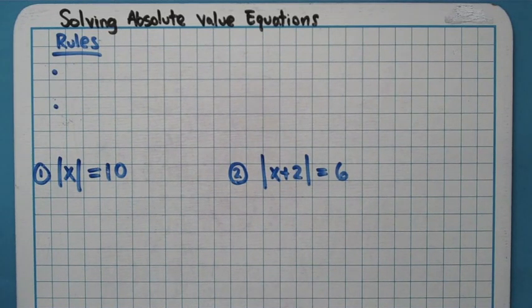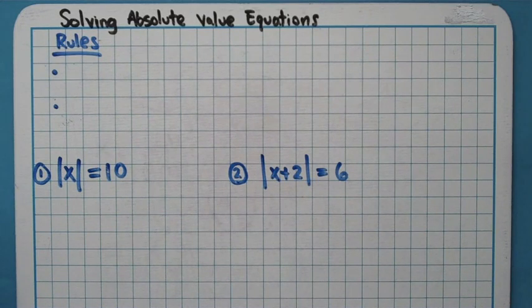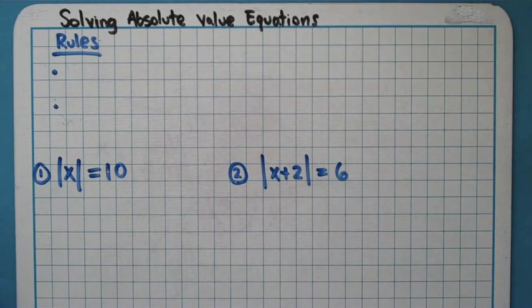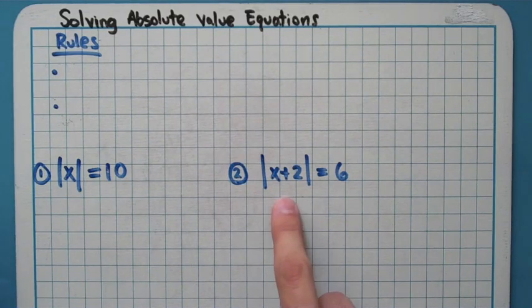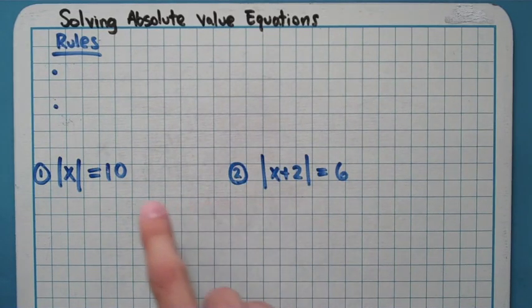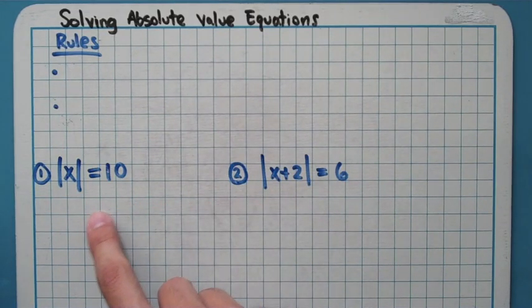This video is going to talk about how you solve absolute value equations. In an earlier video, we talked about how you can evaluate expressions with absolute values when there's just numbers — you make your final answer positive. But here we don't have that option because we have variables on the inside of our absolute value, and we want to solve an equation where there's an absolute value with a variable in it.